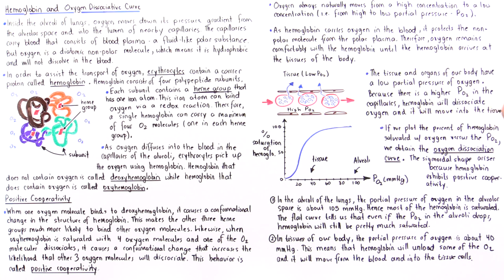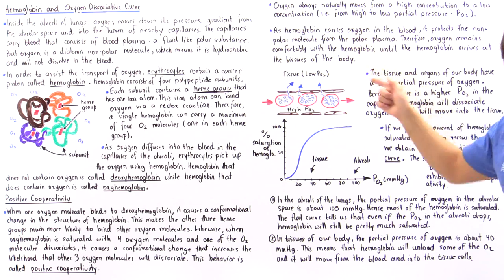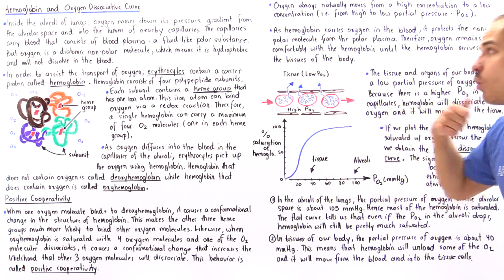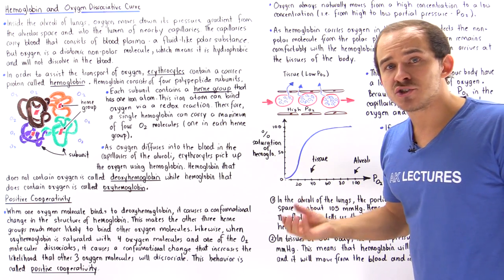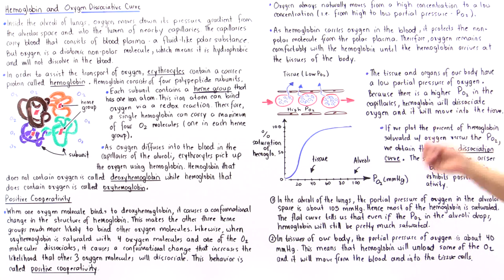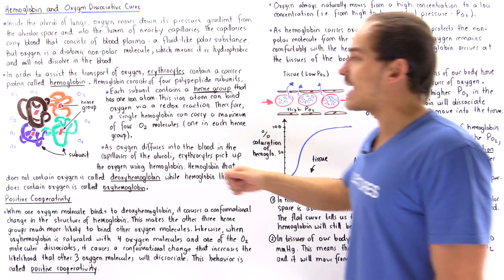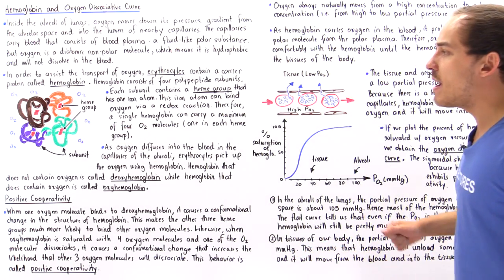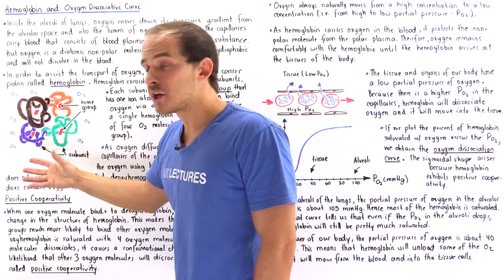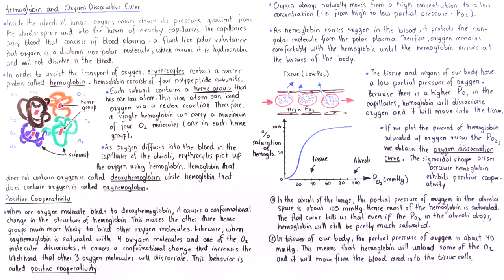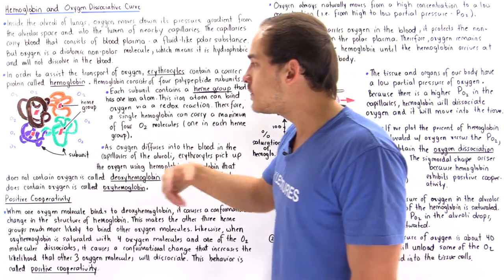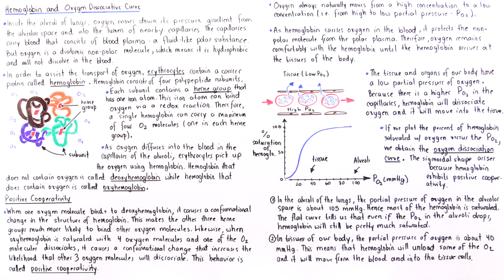As hemoglobin carries oxygen in the red blood cells through the blood plasma of the blood vessels, it protects the nonpolar oxygen molecule from the polar cytoplasm of the red blood cell and the polar plasma of the blood. The outside of the hemoglobin protein is polar, but the inside — where the oxygen resides — is a hydrophobic portion, which is why oxygen can reside comfortably within these four sections of hemoglobin.